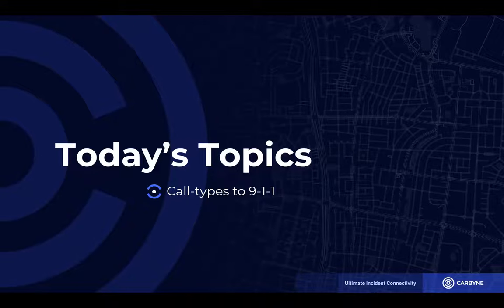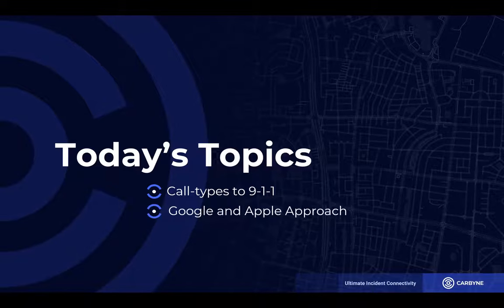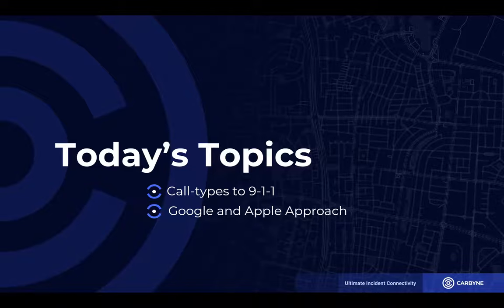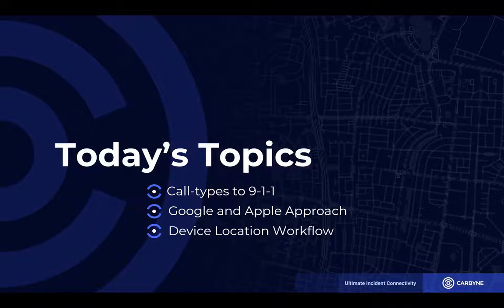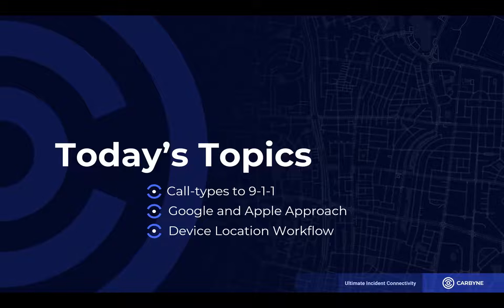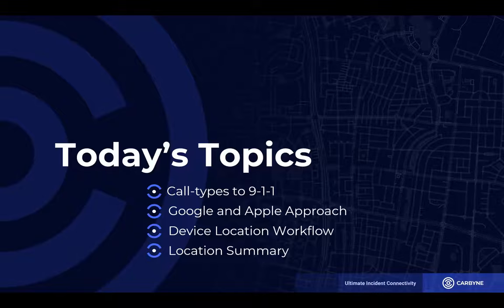Let me talk to you today about our topics. Our first topic is what types of calls come into 911. We'll then talk about how location is calculated — starting with the old network location that everyone's familiar with, Phase 2 Wireless, and then we'll look at what Google and Apple do to calculate a location based on the device you're holding. We'll then look at the device location workflow in the cloud — how does information flow, where does it go, and how does it get back to the 911 centers? Finally, we'll do a summary and answer your questions.